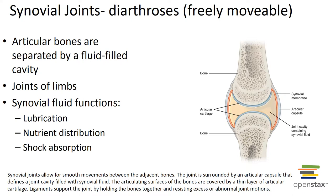Synovial joints are freely movable and have articulating bones separated by a fluid-filled joint cavity. Not only are synovial joints composed of fibrous connective tissue and cartilage, they also possess a space between the articulating bones called the synovial cavity, which contains synovial fluid. This fluid is largely derived from blood and has a clear, viscous, egg-white consistency. Even in a large joint such as the knee, the total quantity of synovial fluid is normally less than 3 milliliters. There are three primary functions of synovial fluid: lubrication, nutrient distribution, and shock absorption.